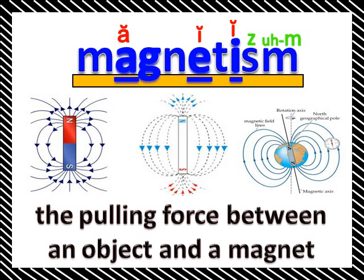The magnetism is stronger at the north pole and the south pole. Magnetism is stronger at the poles.